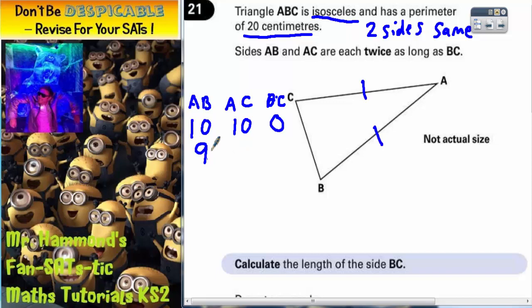So let's try the next number down. Let's make AB 9 and AC 9. If both of those sides are 9's, that means there is only 2 left to get it up to 20, because 9 plus 9 is 18, so this side would have to be 2.